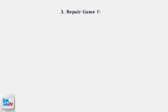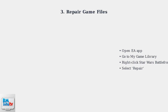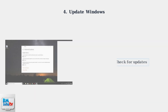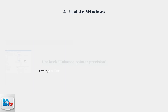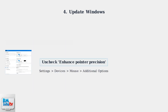Next, repair your game files through the EA App by right-clicking on Star Wars Battlefront 2 in your library and selecting Repair to fix any corrupted files. Update Windows to ensure you have the latest system fixes by searching for Update in the Start menu and checking for available updates. Also disable mouse acceleration by going to Windows Settings, then Devices, Mouse, Additional Mouse Options, and unchecking Enhance Pointer Precision.